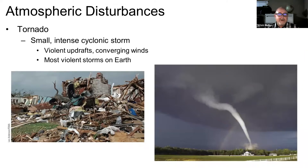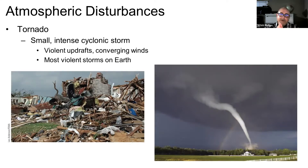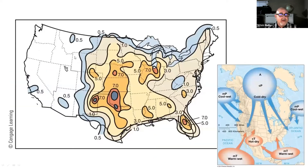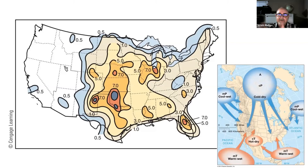Tornadoes are smaller disturbances but extremely dangerous. It's a cyclonic storm — a low pressure system like a hurricane but very small and very intense, with violent updrafts of converging winds. They are the most violent storms on earth. Hurricanes can impact a wider area, but tornadoes, although they impact a smaller area, can cause extreme destruction. There's a region called Tornado Alley right through the middle of the country, caused by conflict between different air masses — cold dry air coming into contact with warm and wet air — which is one reason you see so many tornadoes there.